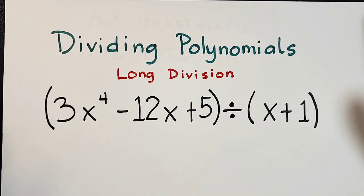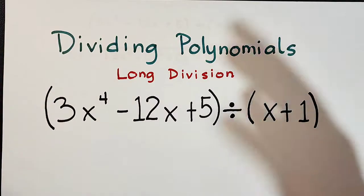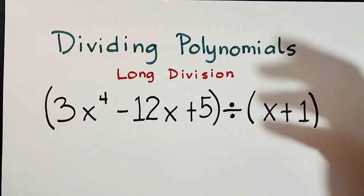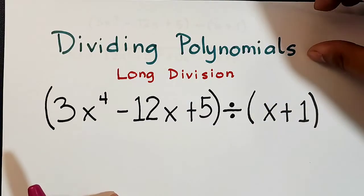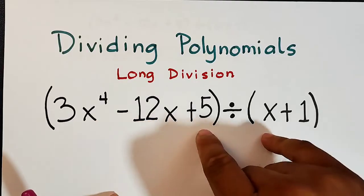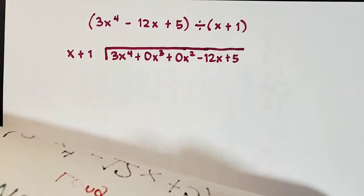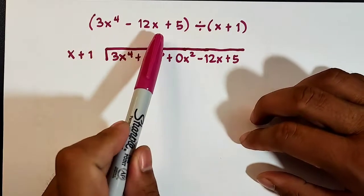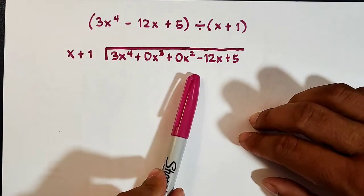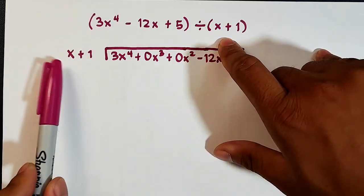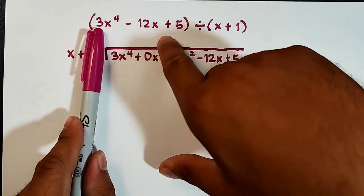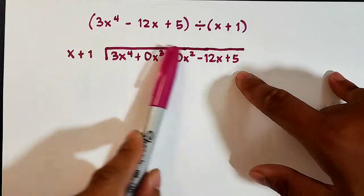Hi guys, it's me, Teacher. In today's video we will do dividing polynomials using long division. This is part two of yesterday's video, so without further ado let's do this topic. The problem we have is 3x to the fourth power minus 12x plus 5, divided by x plus 1. This is the given dividend and x plus 1 is your divisor, and you will write this in long division form.